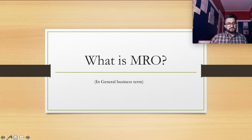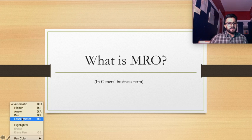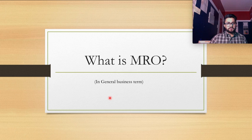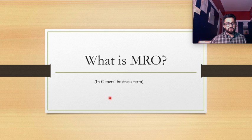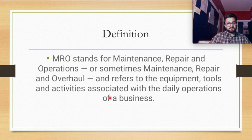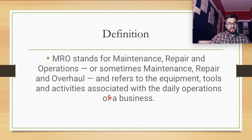Welcome to another video. In this video I'm going to talk about what is MRO. MRO is differentiated in two different business terms: one is the general business term, or general supply chain, and the other is the aviation industry. MRO in general business terms stands for Maintenance, Repair and Operation, but in the aviation industry MRO stands for Maintenance, Repair and Overhaul.